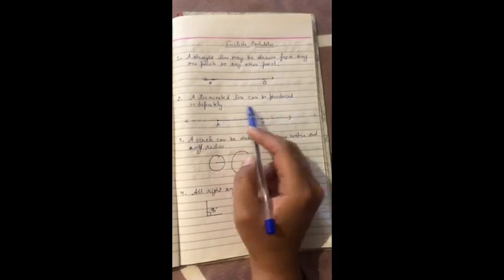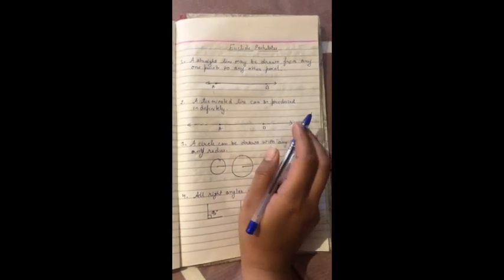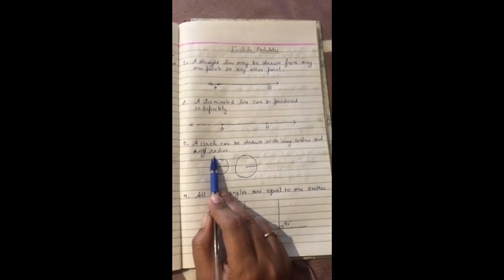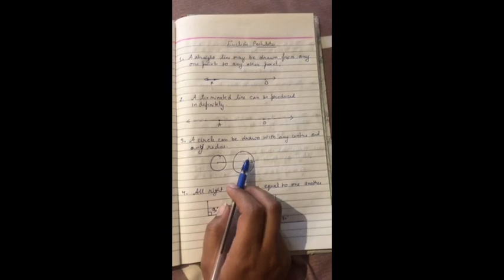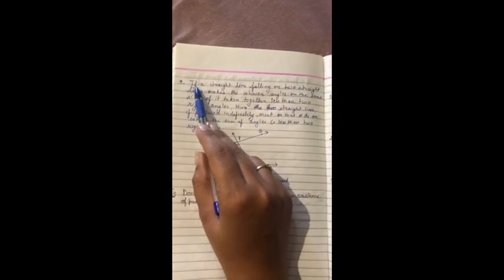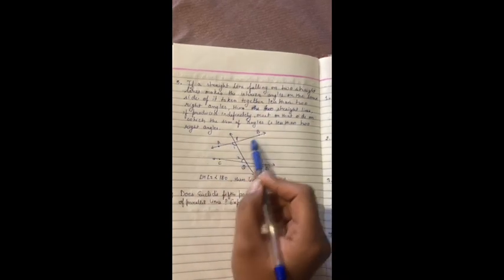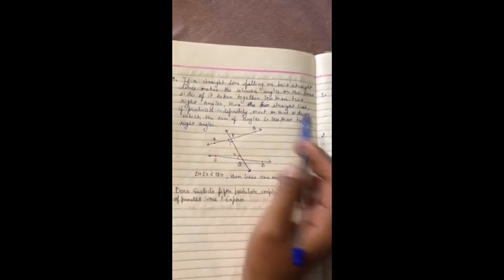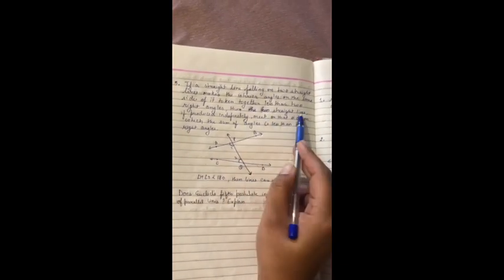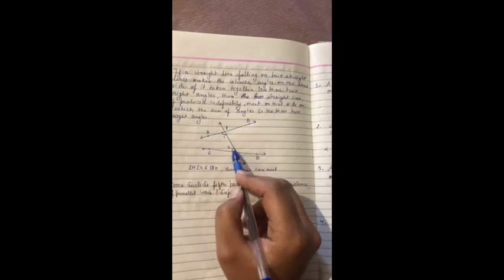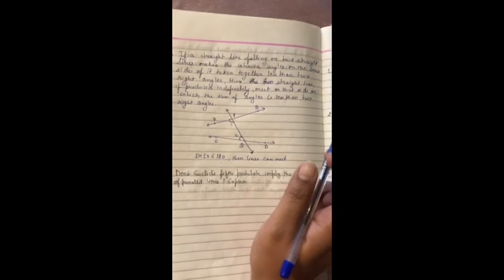A terminated line can be produced indefinitely. The fifth postulate states that lines meet on that side on which the sum of the angles is less than two right angles. That means if the sum is less than 180 degrees, the two lines meet. That is the fifth postulate.